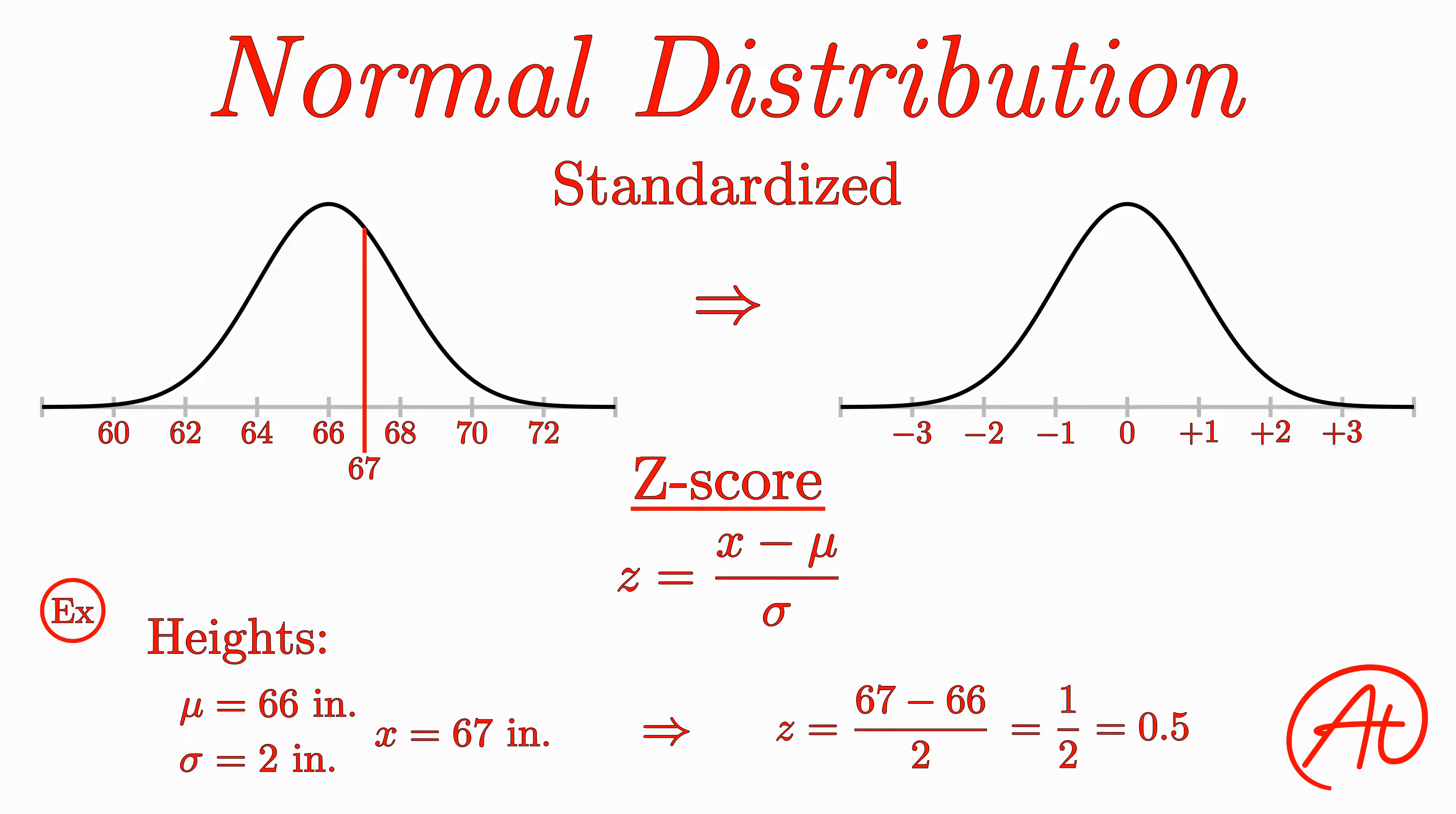This z-score of 0.5 means that your data point is half of a standard deviation above the mean and located here, the same exact location in the distribution as before.